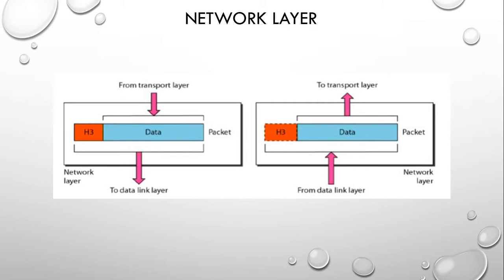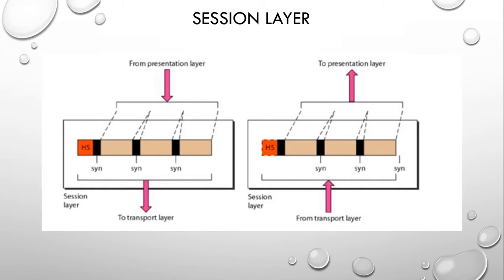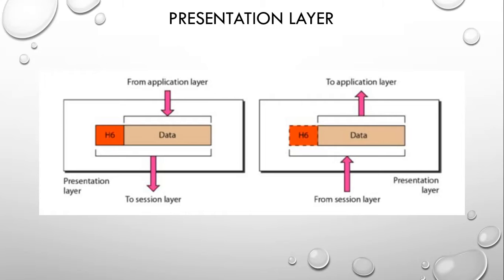The transport layer provides end-to-end connections and is responsible for the delivery of a message from one process to another. Examples include UDP and TCP. The session layer is responsible for dialogue control and synchronization — examples include NetBIOS, NFS, and SCP. The presentation layer handles presenting the data and manages encryption and decryption. Examples include JPEG, GIF, and MPEG.